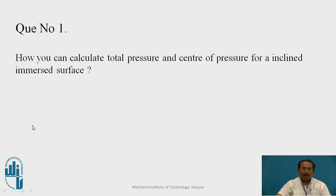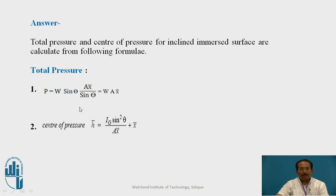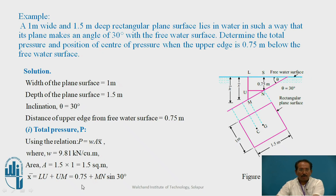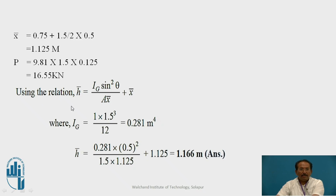To summarize, for an inclined surface: total pressure P equals w·A·x-bar, and h-bar equals I_G·sin²θ / (A·x-bar) plus x-bar. Sample problem: a 1 m wide and 1.5 m deep rectangular plane surface lies in water making an angle of 30 degrees with the free water surface. Determine the total pressure and position of center of pressure when the upper edge is 0.75 m below the free water surface. Write down all given data, calculate total pressure using P equals w·A·x-bar, then find h-bar using the formula — the answer is h-bar equals 1.166 m.